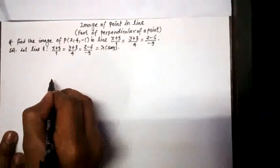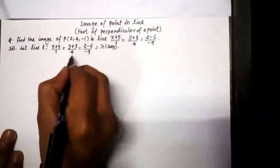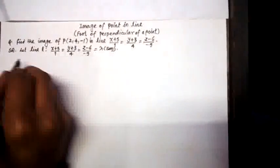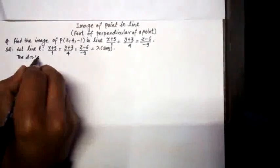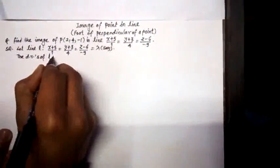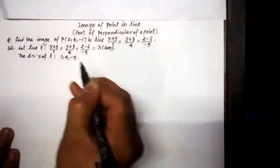By comparing it to the standard form of equation of line, that is (x-x₁)/a = (y-y₁)/b = (z-z₁)/c, the direction ratios, the DRs of line L are 1, 4, -9.